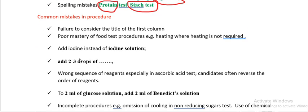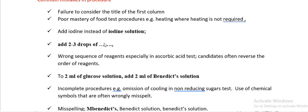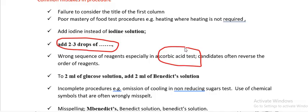Common mistakes in procedure: failure to consider the title of the first column, poor mastery of food test procedures, adding heating where it is not required — heating is mainly for non-reducing sugars and reducing sugars. Write 'iodine solution,' not just 'iodine,' since iodine comes in different forms. Avoid '2 to 3 drops' — be specific. Wrong sequence of reagents is also common, especially in the ascorbic acid (vitamin C) test, where candidates reverse the order.